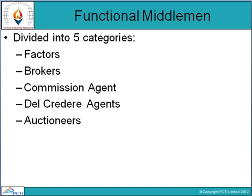A broker brings buyers and sellers together and negotiates terms and conditions on their behalf. Commission agents sell others' goods and earn a commission. A del credere agent sells goods on credit and assumes the risk of bad debts. Auctioneers are middlemen appointed as agents to sell goods by auction, on the basis of bidding.